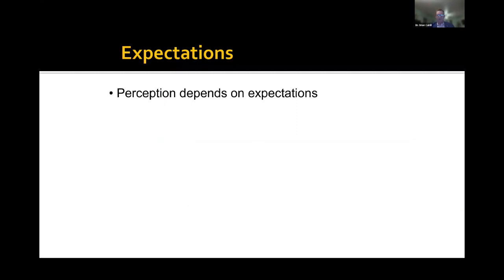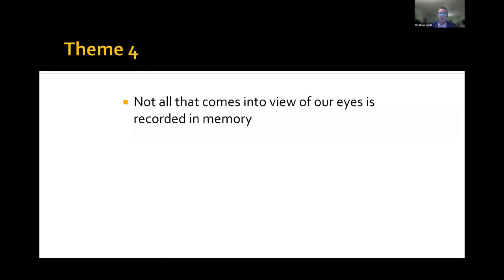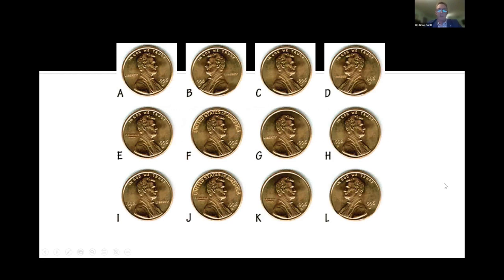Perception depends on expectations. The third theme: perceptions are more important than reality. Not all that comes into our eyes is recorded in memory. We've all seen a penny thousands of times, so I'm going to give you a penny lineup and see if you can pick out the real one. The answer is A — that's the real penny. We can do this with the Apple logo too; even things we've seen countless times are hard to identify precisely in a lineup because we're not used to seeing them manipulated in subtle ways.